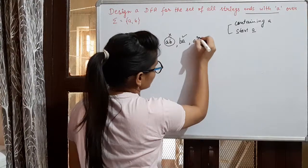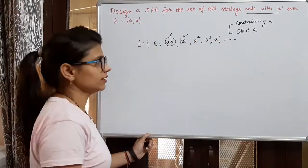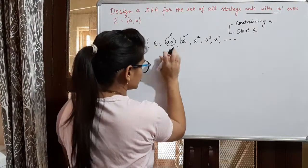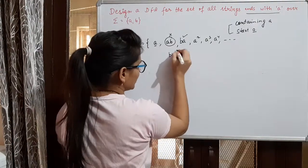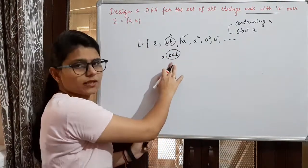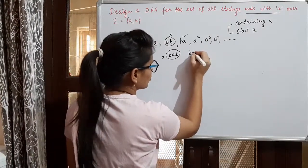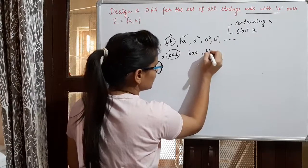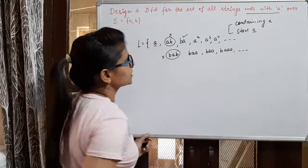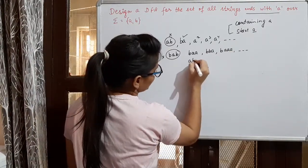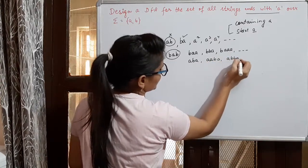Any number of A's — A, AA, AAA, and so on — all end with A. Strings like ABA, ABAA, BABAA, ABABAA also end with A. So there are infinitely many strings in this language.